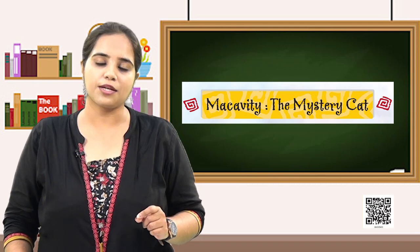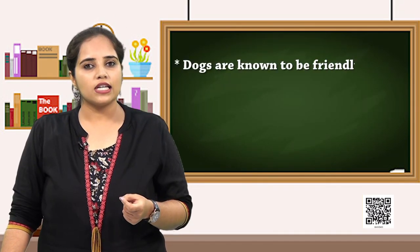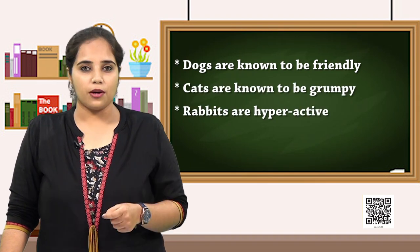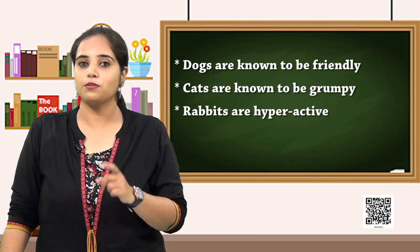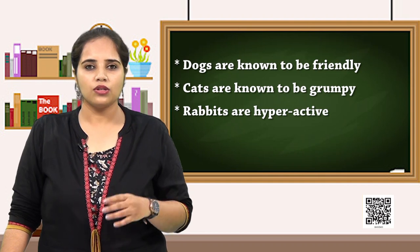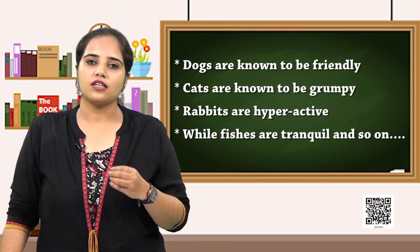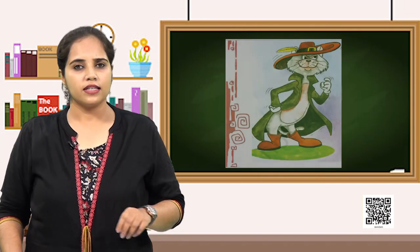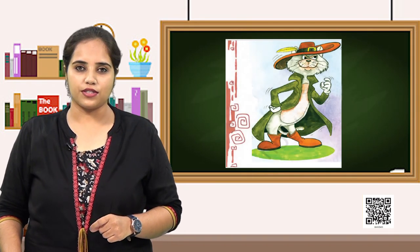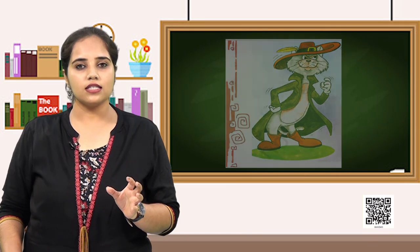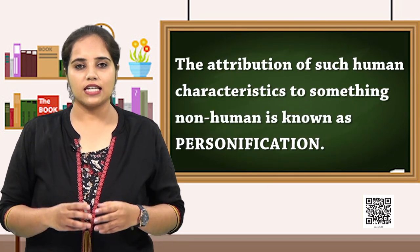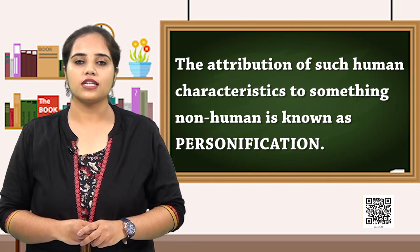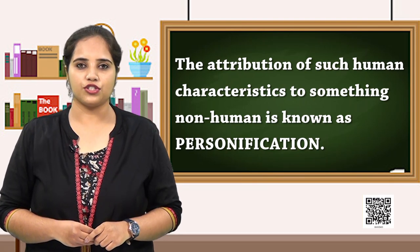How are dogs usually described? Dogs are usually called friendly, like cats are usually called grumpy, and rabbits are hyperactive. If you have them, you know it. And when it comes to fish, fishes are tranquil, and so on. It keeps going like that for almost all pets. Here is one such cat with unique characteristics, and that is when a human characteristic is given to something non-human — the particular process of transformation is called personification.